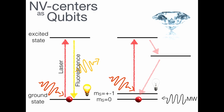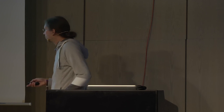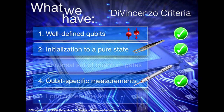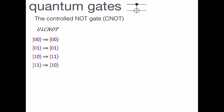This gives us full control: when we see fluorescence light, the electron came from the ground state; if we don't see light, the electron came from the spin-up state. By choosing the microwave pulse appropriately, we can also create a superposition. Returning to the DiVincenzo criteria: we have well-defined qubits in diamond, we can initialize to a pure state, and we have qubit-specific measurements using the laser. What we now need are quantum gates.